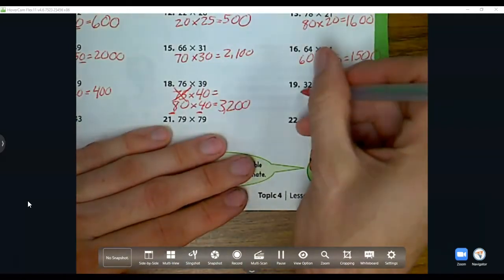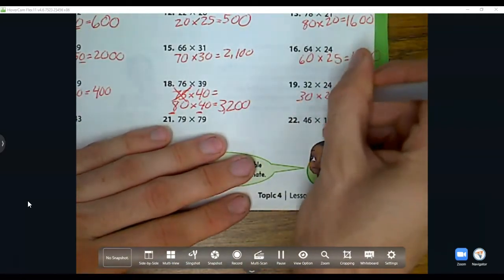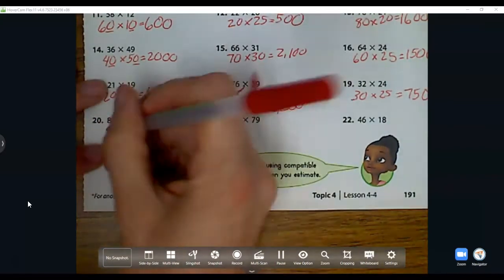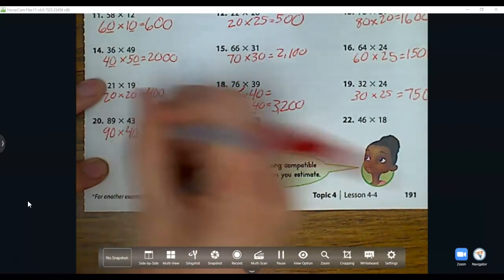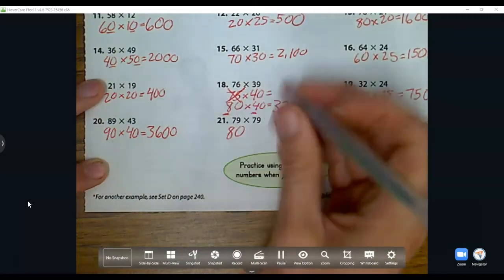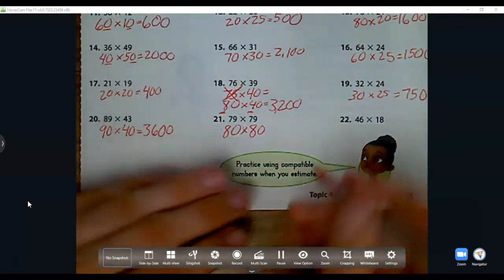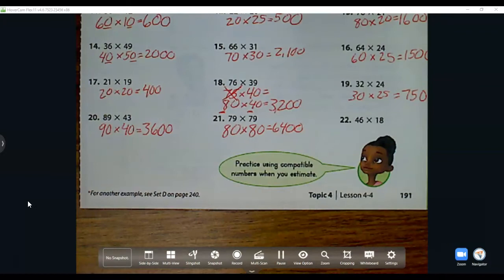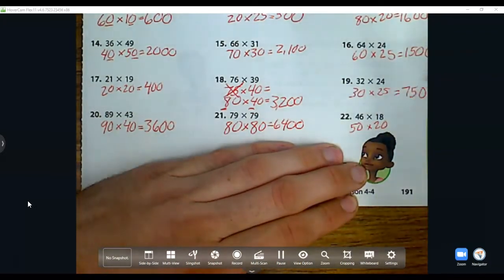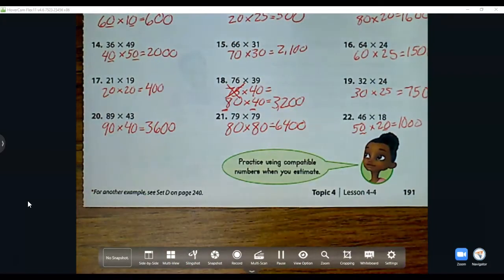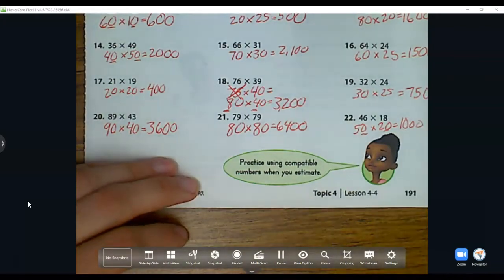Next: 32 is close to 30 times 25. 3 times 25, that's 3 quarters is 75, add a zero back on. 89 is close to 90, 43 is close to 40. 4 times 9 is 36, add those zeros. 79 is close to 80 times 79 is close to 80, which is 64, and add those zeros back on. Our last one: 46 is close to 50, 18 is close to 20. 5 times 2 is 10, add those two zeros back on. So now when I get good at multiplying two-digit numbers, I know my actual answer is going to be close to 1000.